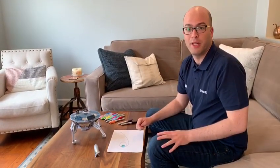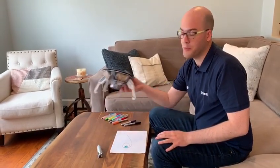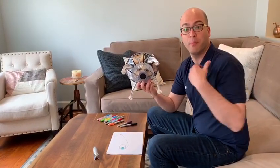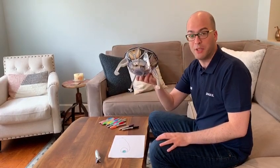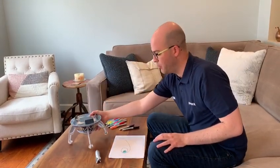Hi guys, Yonatan from SpaceIL. Today I wanted to explain a little bit about the trajectory corrections that we did and will do, and how they work. So if this is our spacecraft, here at the bottom we have a rocket engine that we can fire to give the spacecraft an extra push on its way to the moon.